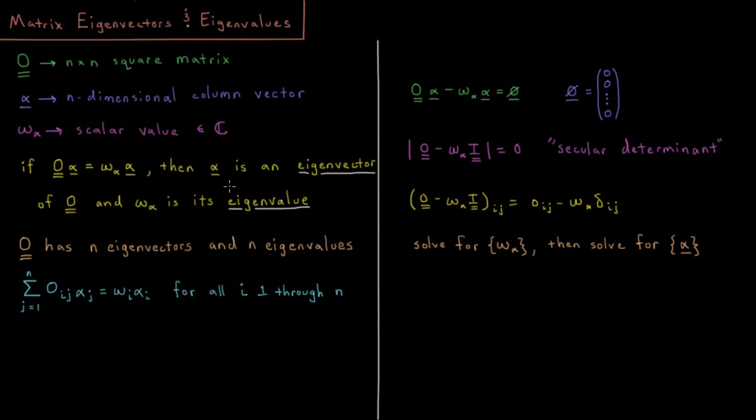then we would say that alpha is what is called an eigenvector of matrix O, and the value omega_alpha is the eigenvalue of vector alpha for that matrix O.